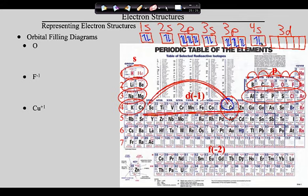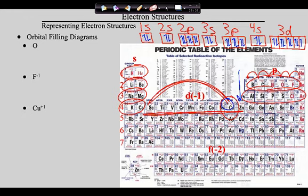Electrons 19 and 20 go in the 4s, taking us through electron 20. We still need to reach 29. Starting with electron 21 in the 3d, just like in the P's these go unpaired: 21, 22, 23, 24, 25, then 26, 27, 28, and 29 pair up. This gives us the orbital filling diagram for copper. There is one empty box in the 3d, confirming we have done this properly.